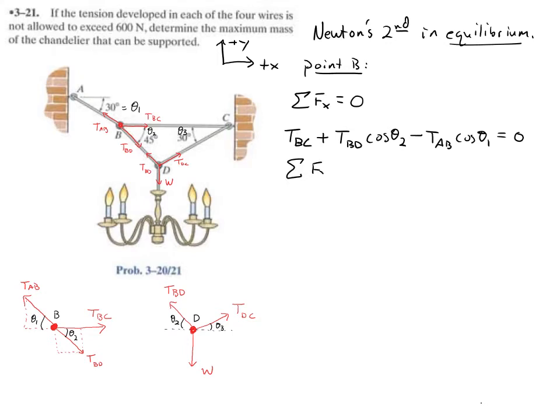And then I've got the sum of the forces in the y direction equals to zero for that point, which is just going to be TAB sine theta 1 minus TBD sine theta 2 equals to zero. I'm going to call this equation one and this equation two.